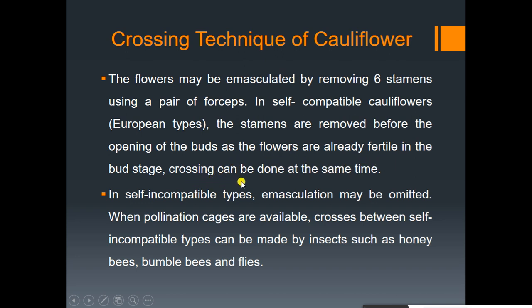Crossing can be done at the same time. In self-incompatible types, emasculation may be optional when pollen is available. Crossing between self-compatible types can be made by insects such as honey bees, bumble bees, and flies. These are the crossing and selfing techniques of cauliflower.